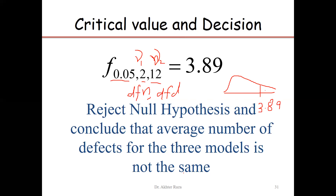Since the null hypothesis is rejected, we can apply post-hoc procedures to compare which brand has a higher number of defects and which brand has a smaller number of defects. This post-hoc procedure will be implemented directly using SPSS.